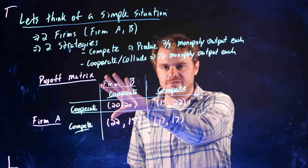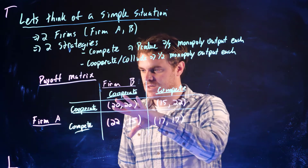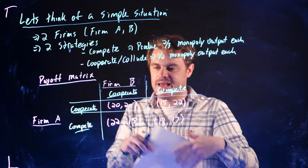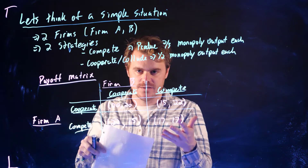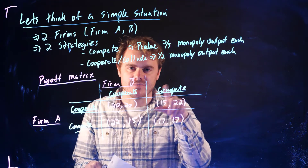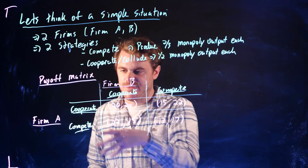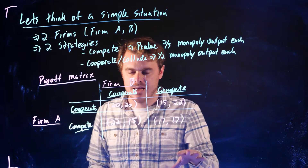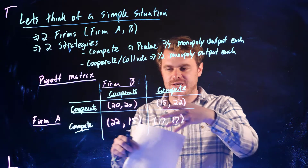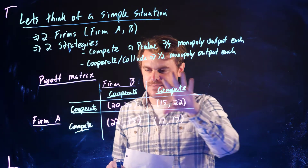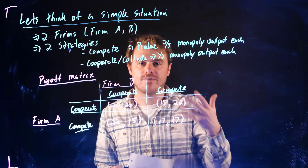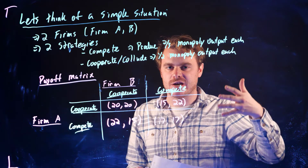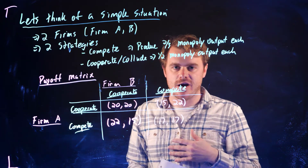That's what a payoff matrix looks like. You should be able to set one up given the payoff numbers, placing strategies and outcomes together. Now that we have the strategies and payoffs in this matrix, we can think about what firms should do and apply the concept of Nash equilibrium.